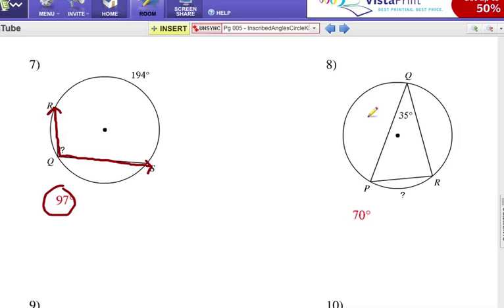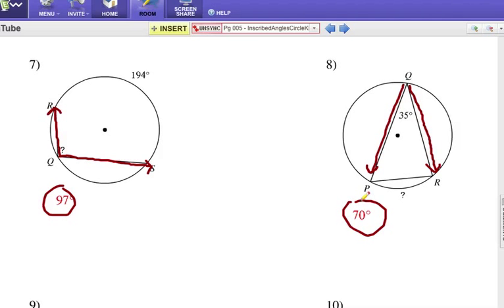Number 8, fairly simple, hopefully. This is an inscribed angle, 35 degrees at Q, and it opens up to create minor arc PR, so you double that, because it's an inscribed angle, 35, and the arc is double 70. So again, we're kind of warming up here for some harder problems. Look for the next video, which will be problem set 2.